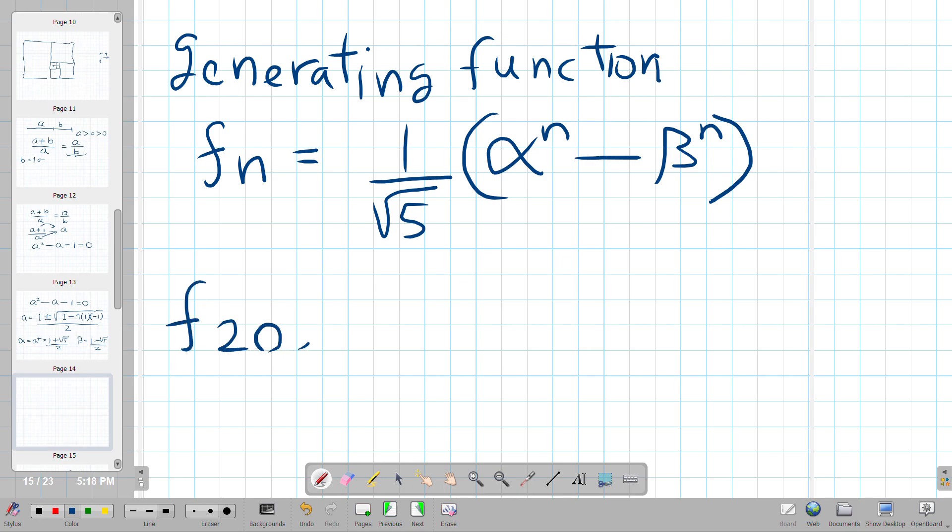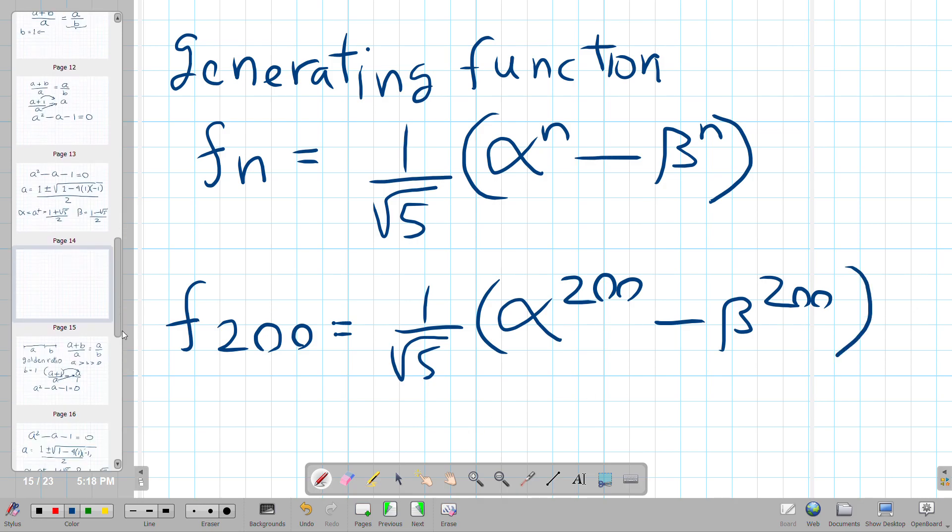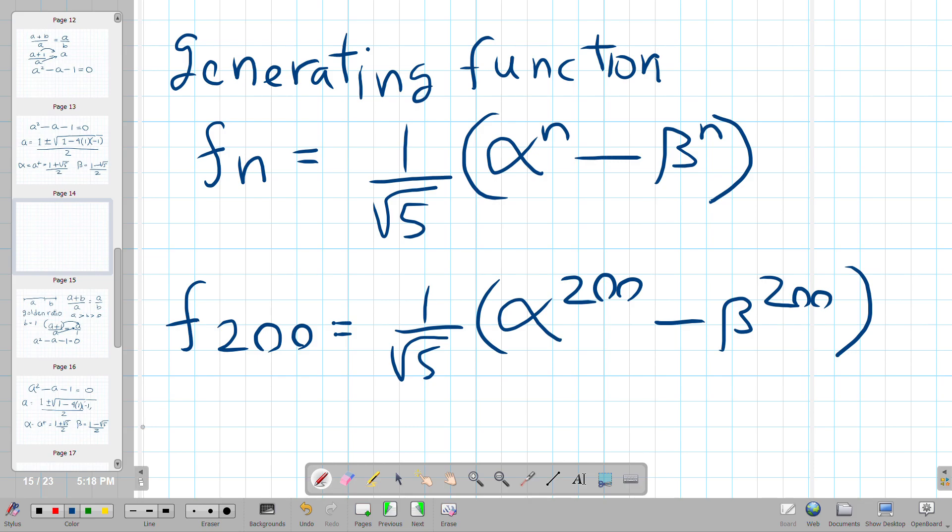F of n is used to generate any terms. For example, if I said F200 is really one over the square root of five, this alpha term, and of course I already showed what alpha was, to the 200 minus beta to the 200.